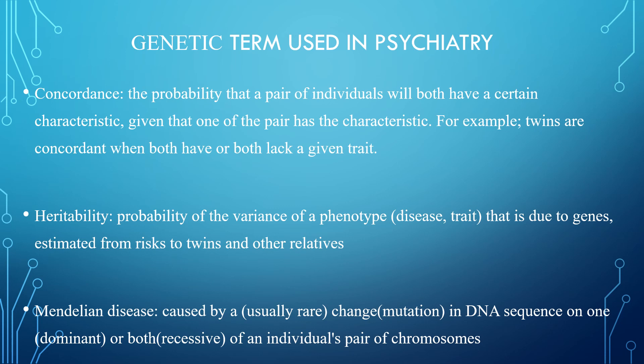The terms very commonly used in psychiatry: concordance is the probability that a pair of individuals will both have a certain characteristic given that one of the pair has the characteristic. For example, twins are concordant when both have or both lack a given trait. Heritability is the probability of the variance of a phenotype that is due to genes, estimated from risk to twins and other relatives. Heredity and inheritance are commonly used with similar meaning but they are different. Inheritance refers to the transmission of genetic information from parents to offspring, and heritability is a statistical measure that estimates the proportion of phenotype.